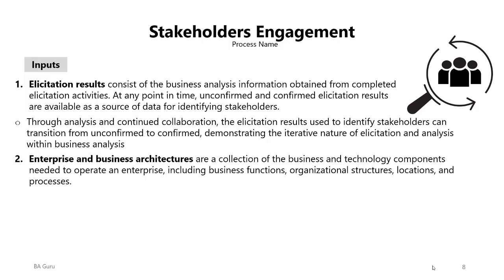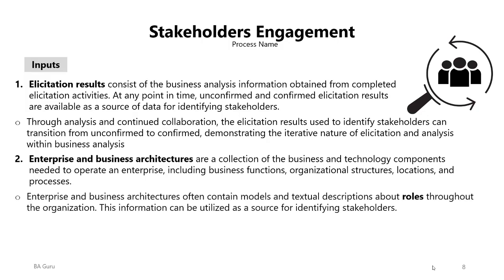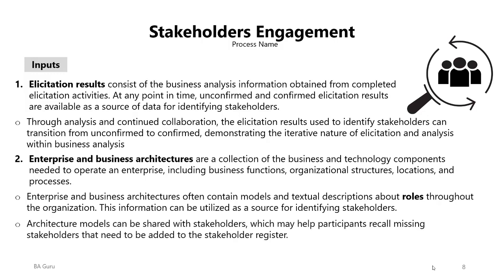The second input is enterprise and business architectures, which are a collection of the business and technology components needed to operate an organization, including business functions, organizational structures, locations, and processes. These architectures often contain models and textual descriptions about roles throughout the organization. This information can be utilized as a source for identifying product stakeholders. Architecture models can be shared with stakeholders to help participants recall missing stakeholders that need to be added to the stakeholder register.